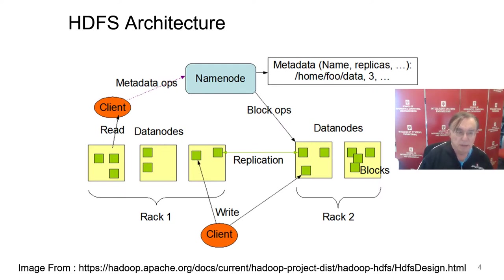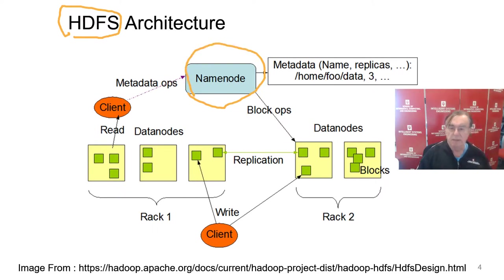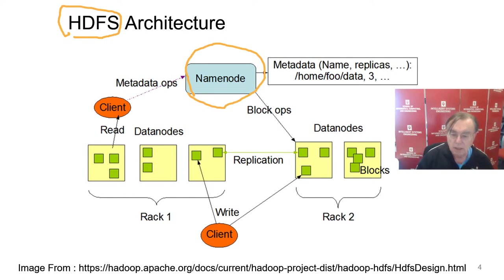Here is the architecture of HDFS, which is a critical component of Hadoop. We have the user, a name node which extracts the metadata describing where things are, and then data nodes which actually store the data — either replicated or with some sort of redundancy parity check built in.